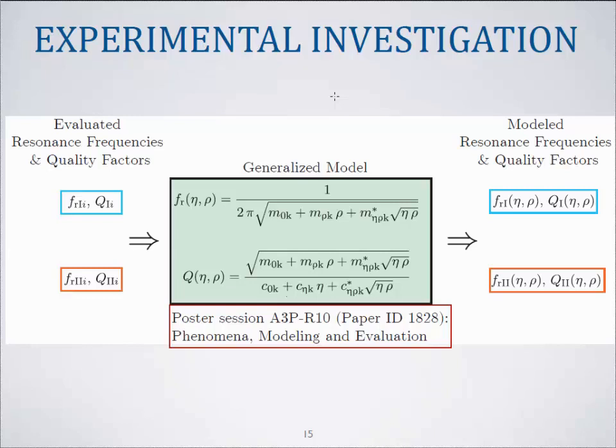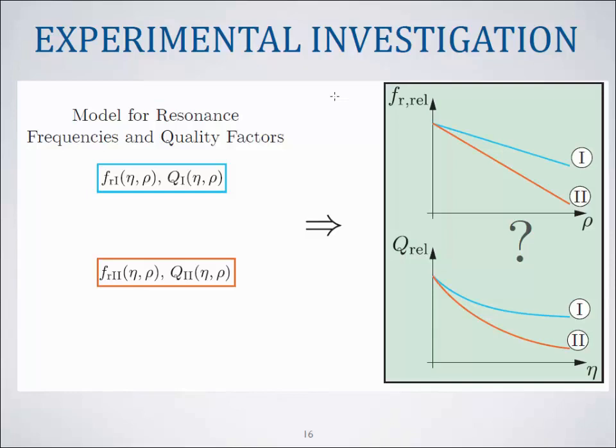The advantage of this is that we then have a model for resonance frequency and quality factor depending on viscosity and mass density. So we can separate the effect of viscosity on the resonance frequency and mass density on the resonance frequency and for the quality factor the same thing. And then actually the investigation is do the sensors we investigated show different sensitivities or responses at the first and the second mode.